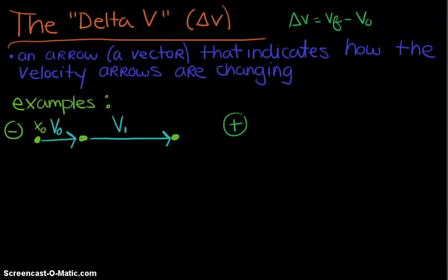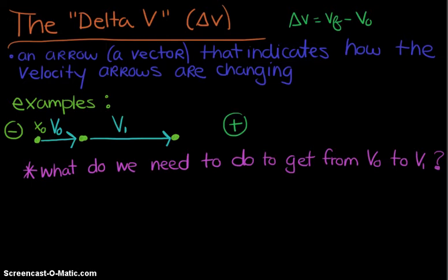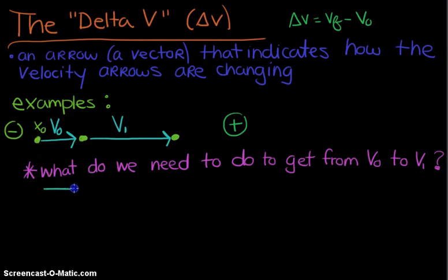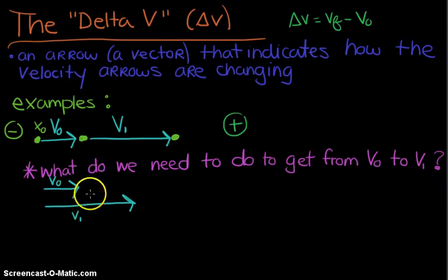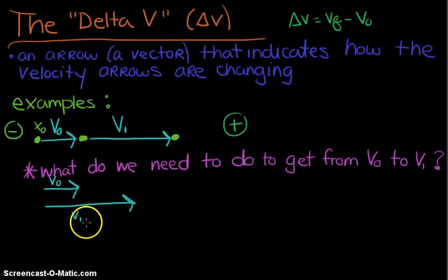I can tell just from the picture that the speed and velocity are increasing, so V sub zero is a smaller velocity vector than V one — this is a speeding up type of motion. In order to think about Delta V as a vector, ask yourself: what do we need to do to get from V sub zero to V sub one? I'm going to copy each of these vectors: V sub zero looks to be about this big, and right underneath it I'll draw V sub one. I didn't give you numbers on purpose because I really want you to think about the vector nature of Delta V.